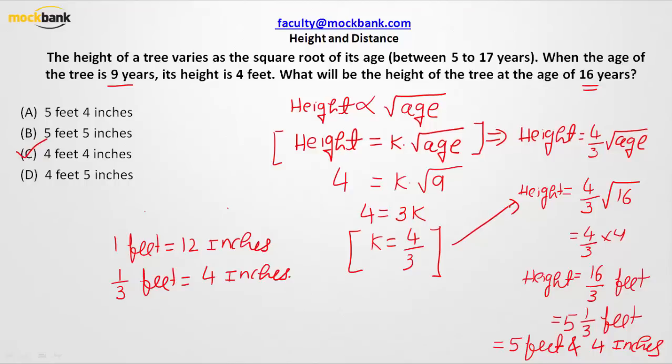Since 1 foot equals 12 inches, so 1 over 3 feet would become 4 inches. And that is how we will find out that when the age is 16 years, height of the tree will be 5 feet and 4 inches.